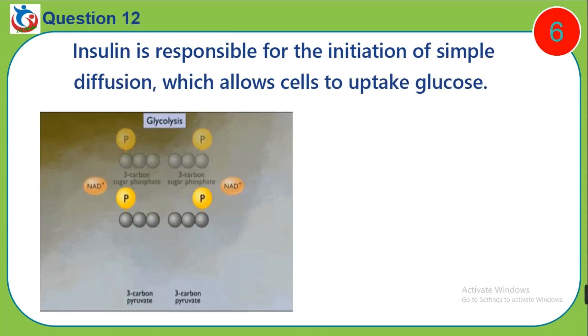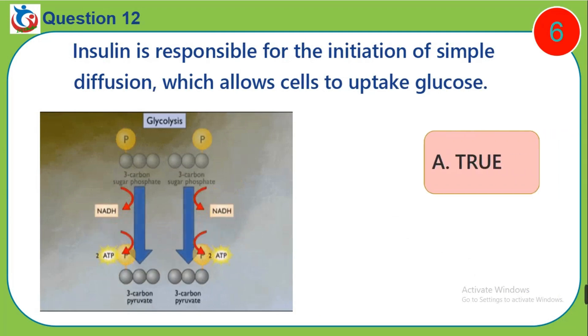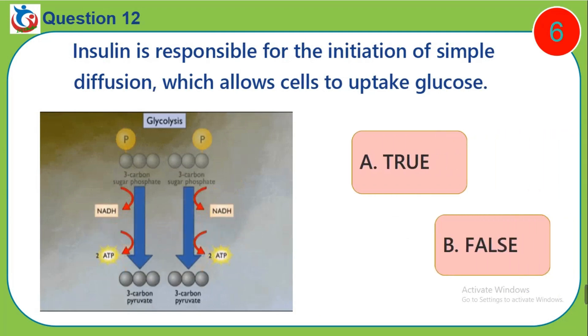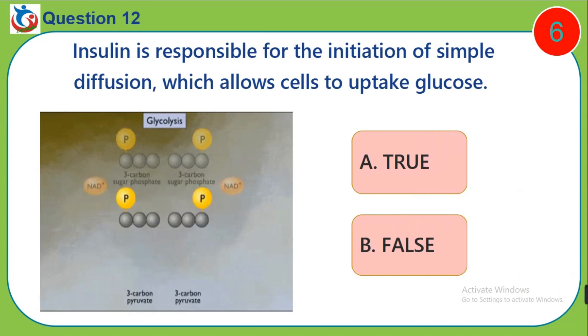Question 12. Insulin is responsible for the initiation of simple diffusion, which allows cells to uptake glucose. True or false?